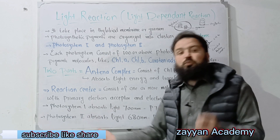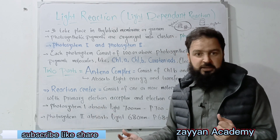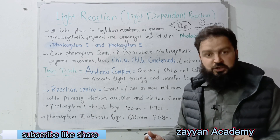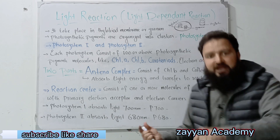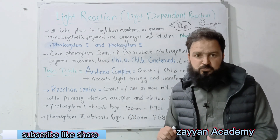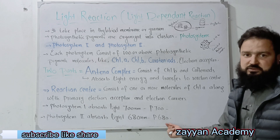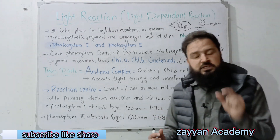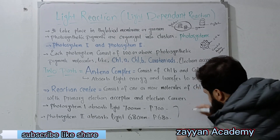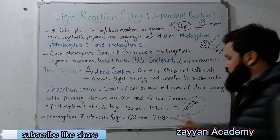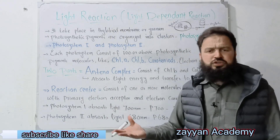The discovery of photosystem 1 and photosystem 2 — photosystem 2 absorbs 680nm light, so the reaction starts, meaning photosynthesis starts. P680 and P700 are the reaction centers. These are important for MCQs — the parts of the antenna complex and the reaction center.